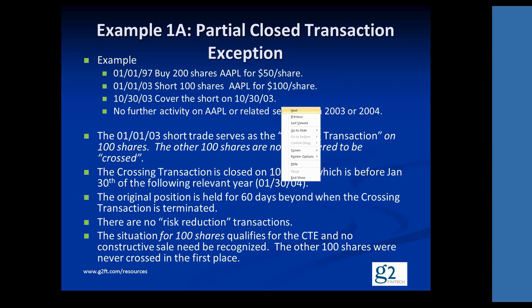With that, we'll move on to example number two. Again, in this example, we don't list the number of shares because it's all assumed to be the same number of shares — let's just say 100 shares for argument's sake. We're going to buy some Apple shares for $50 a share. Six years later, we're going to short Apple shares. We have an appreciated financial position, so therefore we have a crossing trade.